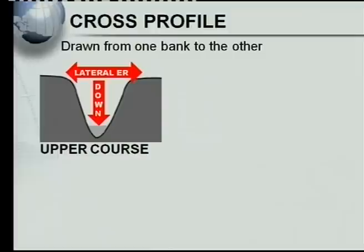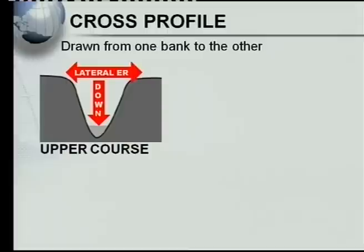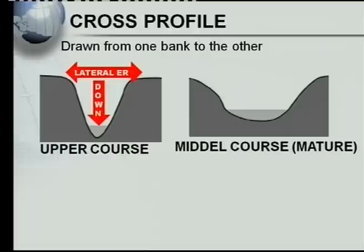The river flows so very fast in the upper course that it can transport larger rocks, and these rocks have a larger downward force, making the river deeper and deeper. That's why you get downward erosion rather than lateral erosion. Additionally, the steep mountain slopes make it very difficult for lateral or sideways erosion to take place.